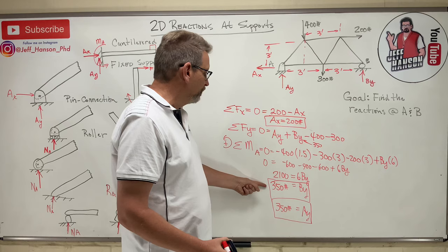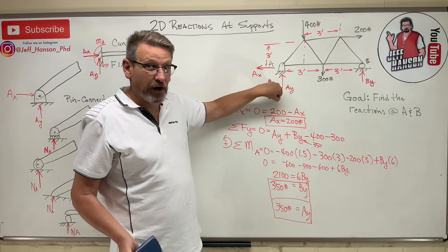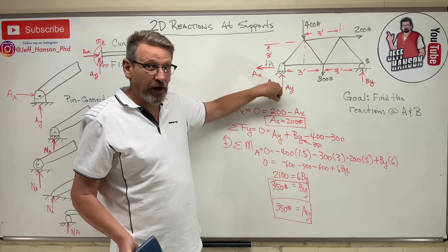So the reactions are: Ax = 200 pounds, Ay = 350 pounds, and By = 350 pounds. The key to this chapter is drawing correct free body diagrams with the proper reaction forces. We'll do more 2D reaction force problems to get a handle on it, then tackle some 3D problems.